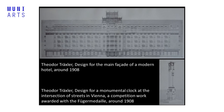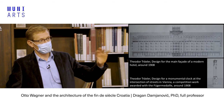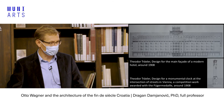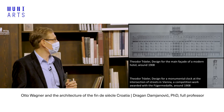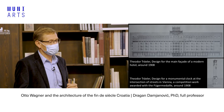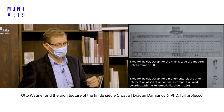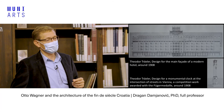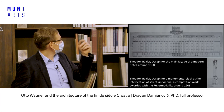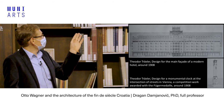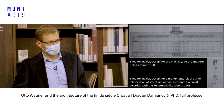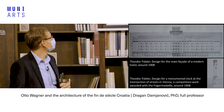We are approaching the last part of the presentation. Let's now look at the situation in other parts of Croatia. Rijeka, or Fiume, was the main port of the Hungarian part of the monarchy, developing rapidly in the late 19th and early 20th century. In the years just before the First World War, one of Wagner's students was very active there — Theodor Trexler from Horn in Upper Austria. His works from his time at the Academy were very much in line stylistically with what Wagner was doing, especially with his Postsparkasse project.